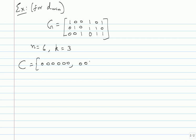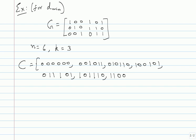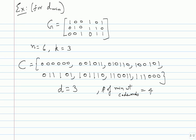The first codeword is 000000. Then list all possible linear combinations to get the eight codewords. From these, minimum distance is easy to evaluate: look at the non-zero codewords. The minimum weight is three. The number of minimum weight codewords equals four. In fact you can list all weights: one codeword of weight zero, four codewords of weight three, and three codewords of weight four.